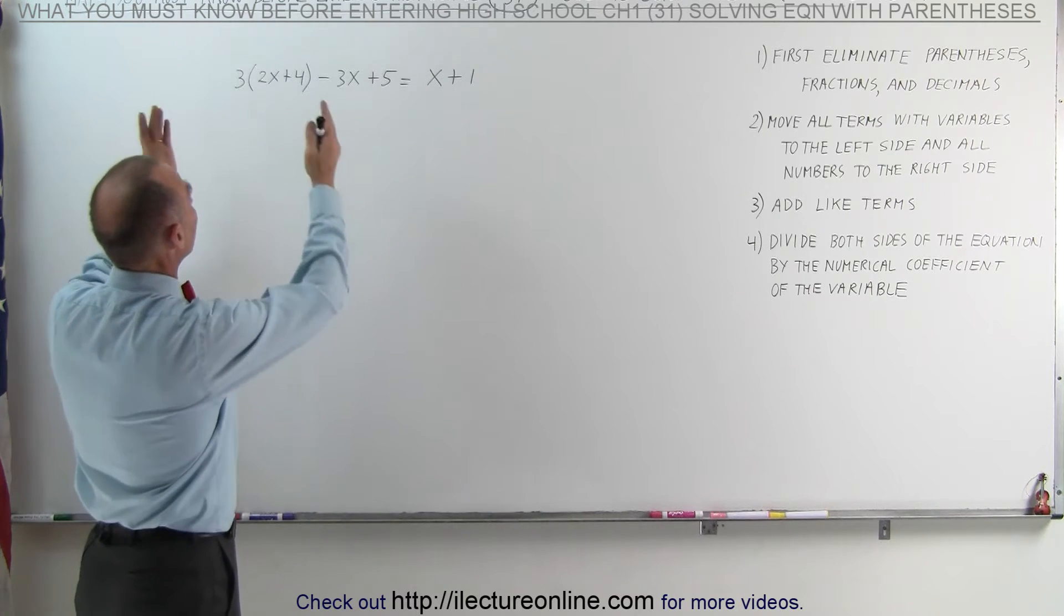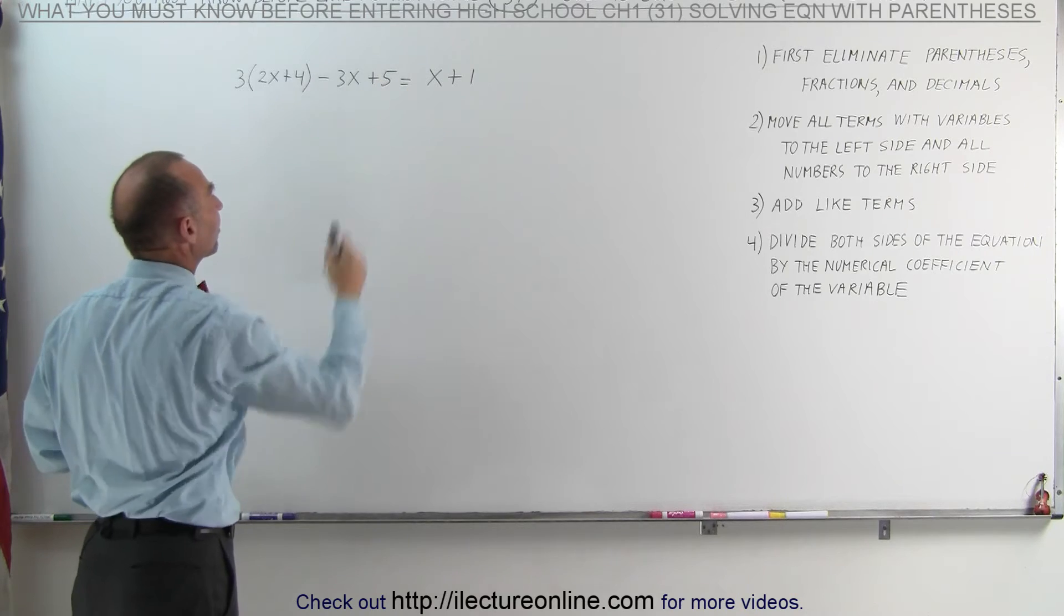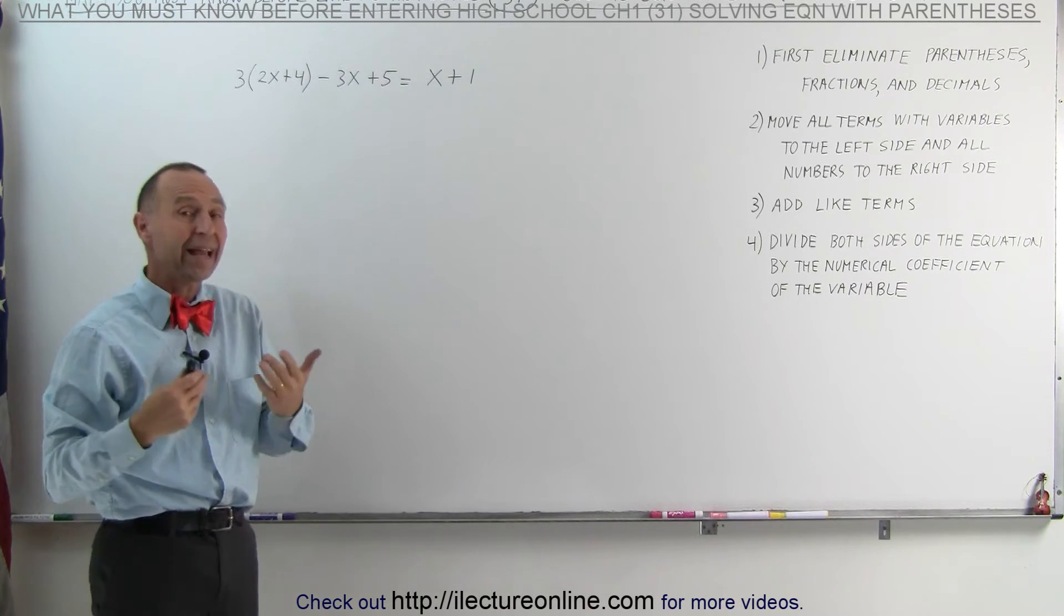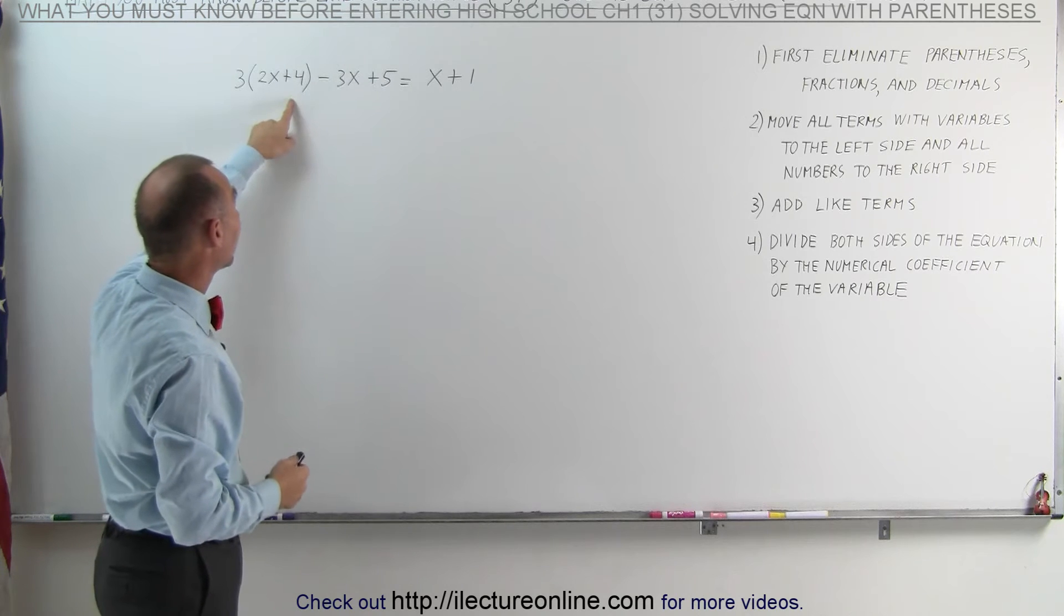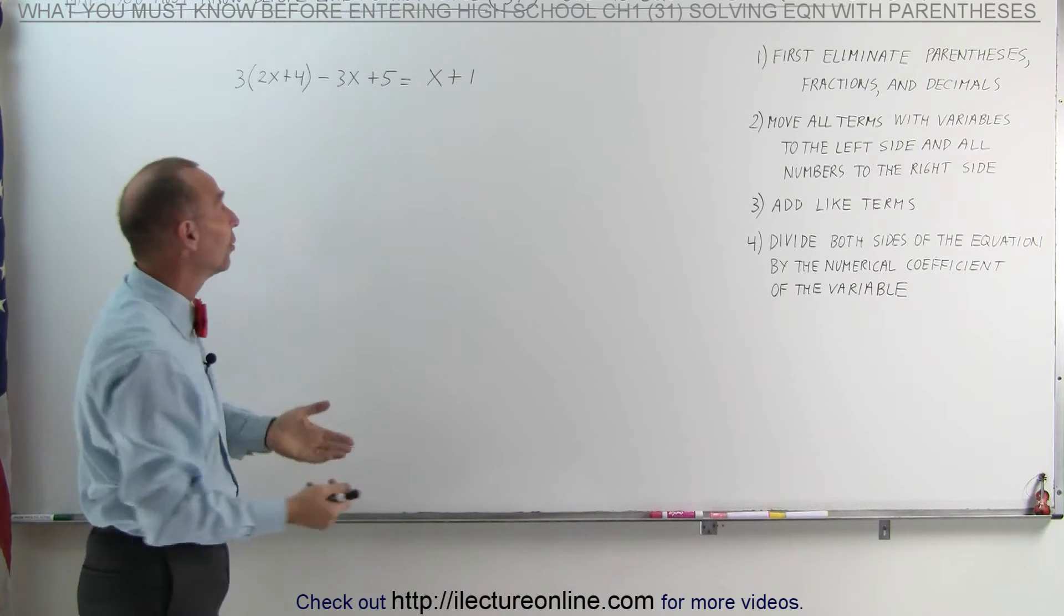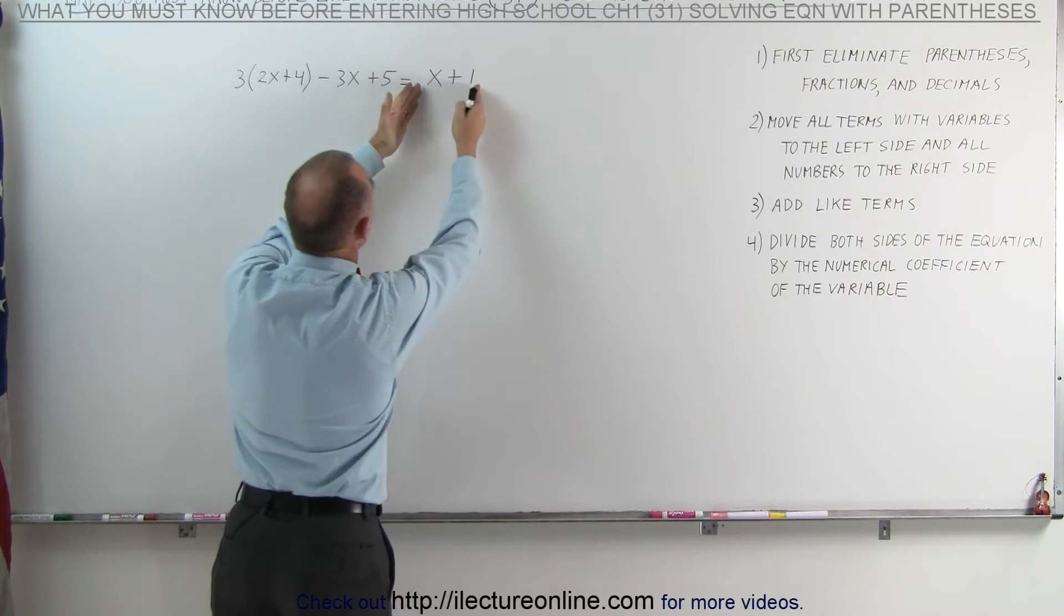Here we have an equation. An equation has a left side, an equal sign, and a right side. When they say solve an equation, that means they're asking us to find the value for x that will make the left side equal to the right side. What must x be so that this equals this?